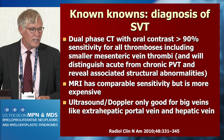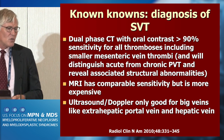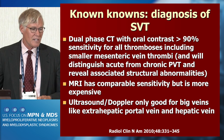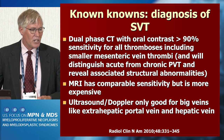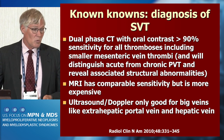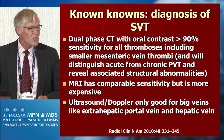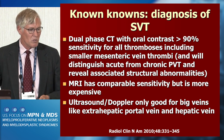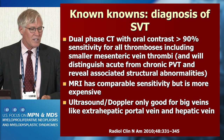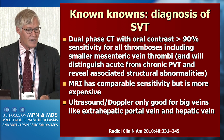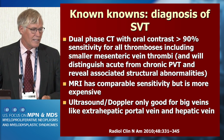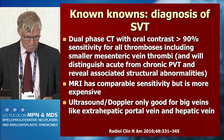How does one look for them? The diagnosis is straightforward: a dual-phase CT with oral contrast has greater than 90% sensitivity for all thromboses, including very small mesenteric vein thrombi, and will often identify structural abnormalities predisposing to the thrombosis. MRI has comparable sensitivity but is much more expensive — perhaps 10 times more. Ultrasound Doppler is only good for the big veins, like the extrahepatic portal vein and the hepatic vein.